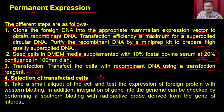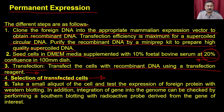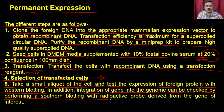After selecting the transfected cells, you can take a small aliquot of the cells and test the expression of the foreign protein with western blotting. In addition, the integration of the gene into the genome can be checked by performing Southern blotting with a radioactive probe derived from the gene of interest.